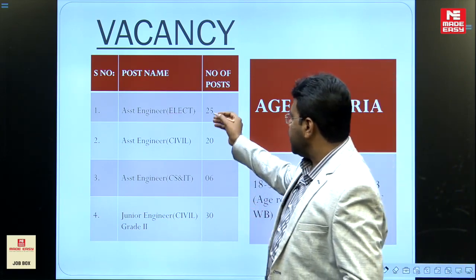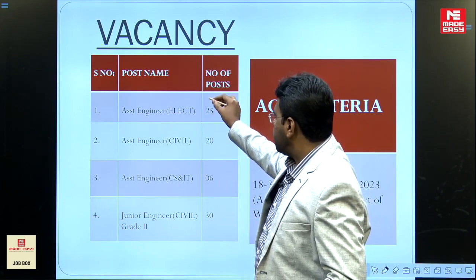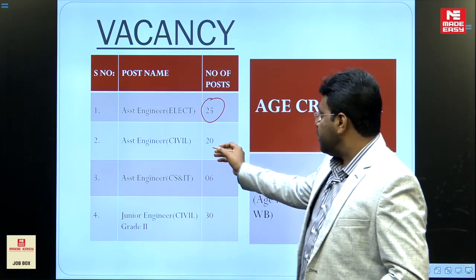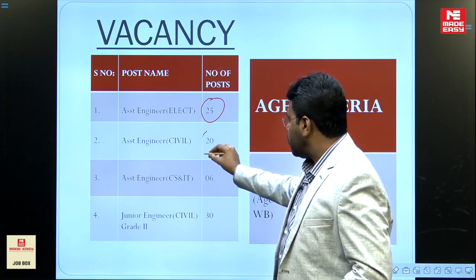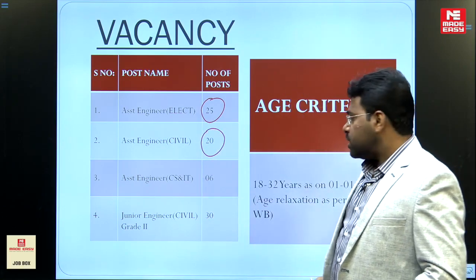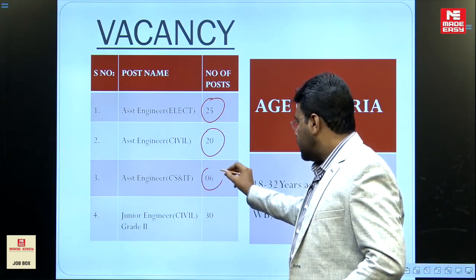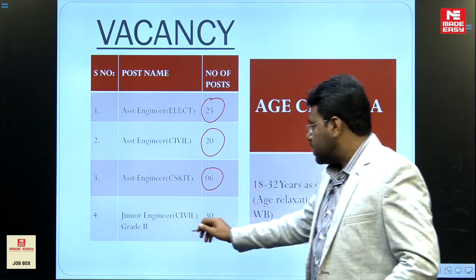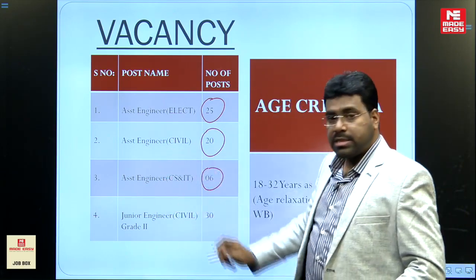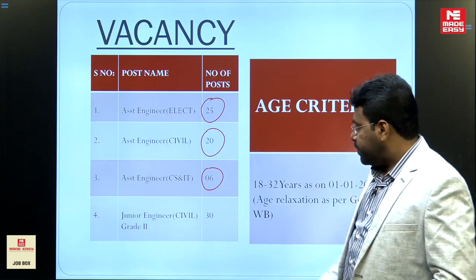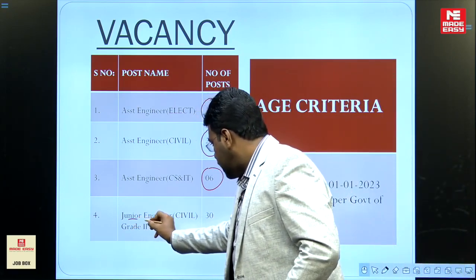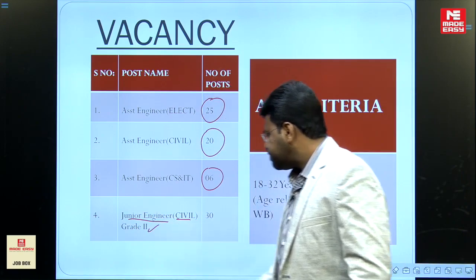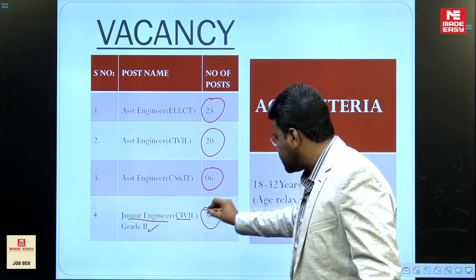The Assistant Engineer Electrical vacancies are 25. The Assistant Engineer Civil vacancies are 20. The Assistant Engineer CS and IT vacancies are 6. The Junior Engineer, particularly civil branch, Grade 2 has 30 vacancies.